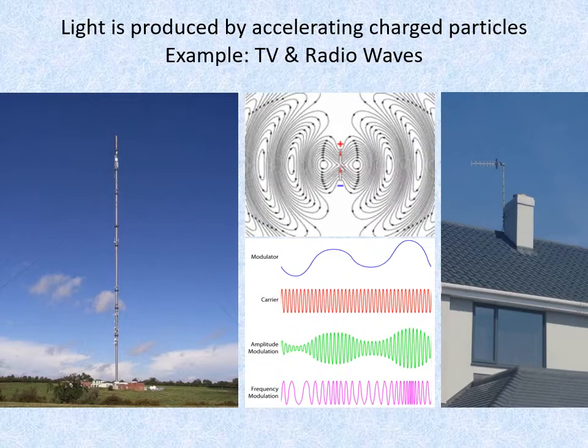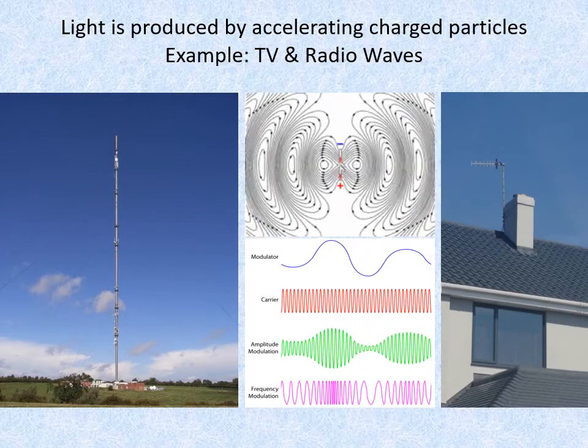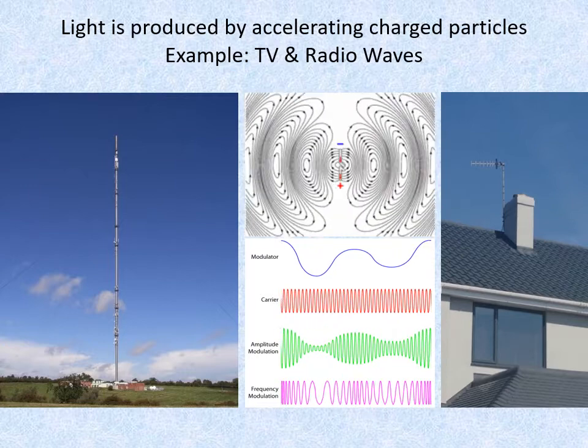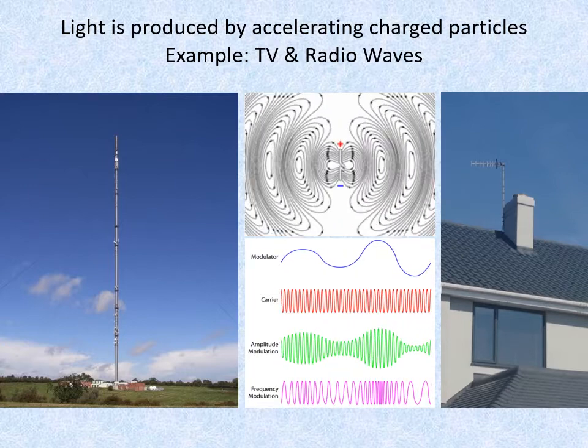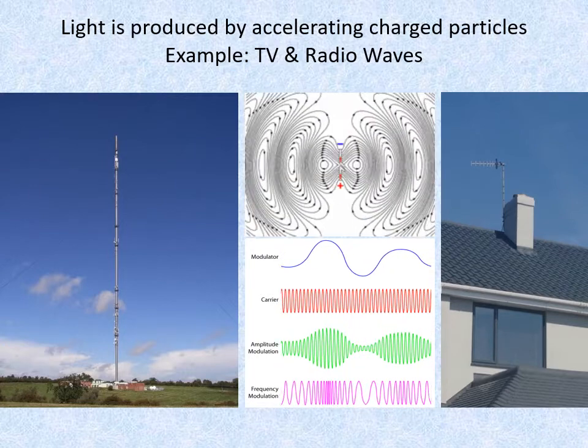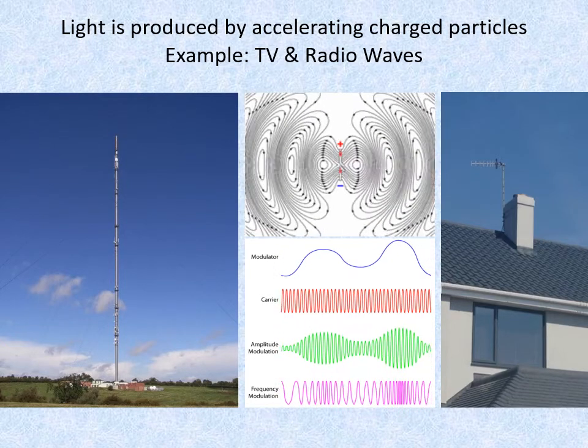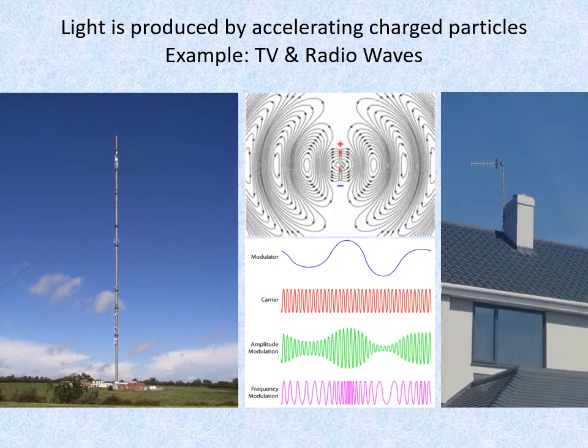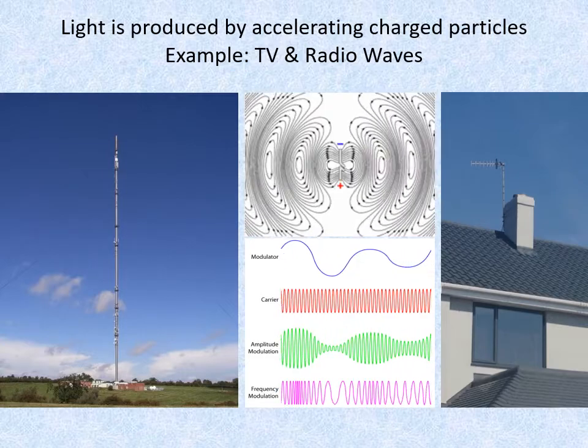This is then decoded and amplified by the circuits in our TV, which reproduces the picture and sound encoded in the original modulated signal. Different channels are in slightly different frequencies. Exactly the same principle is also used in satellite TV broadcasts.